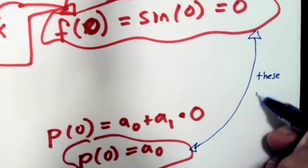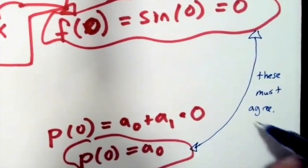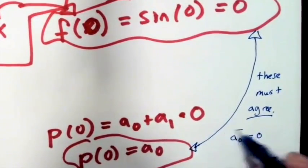Now I match these up and what I get is that coefficient a sub zero just has to be equal to zero.